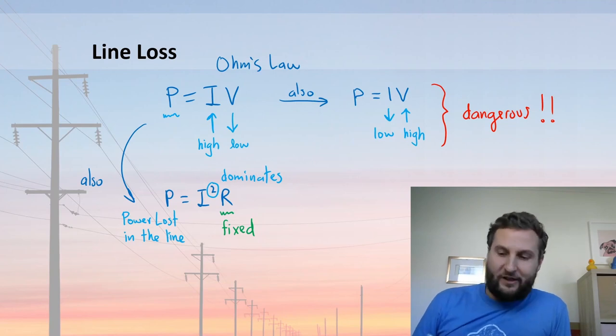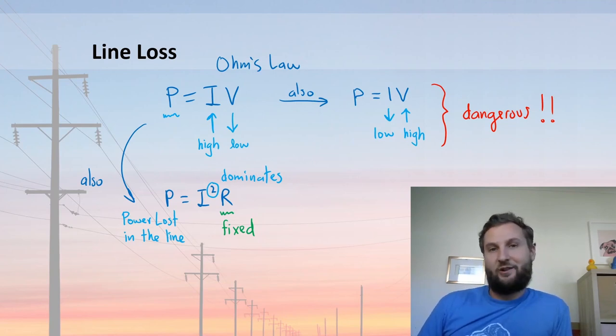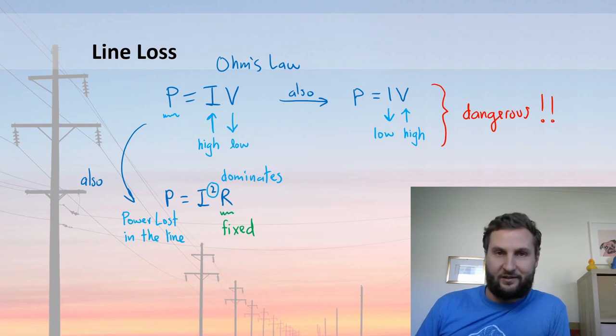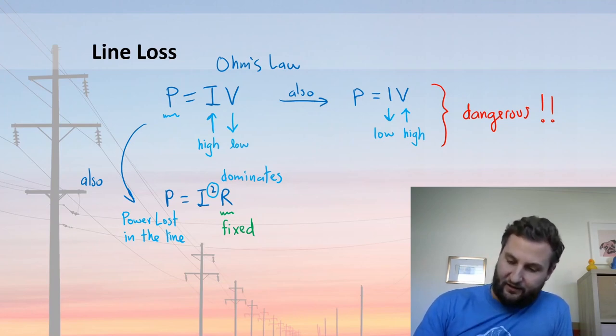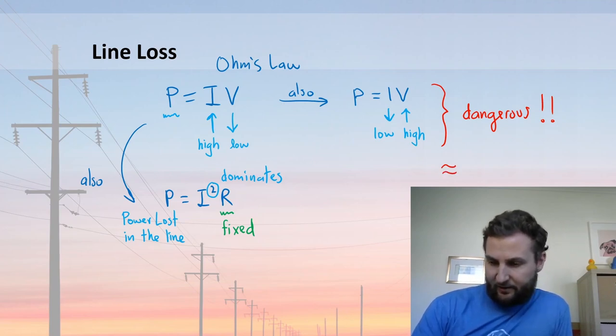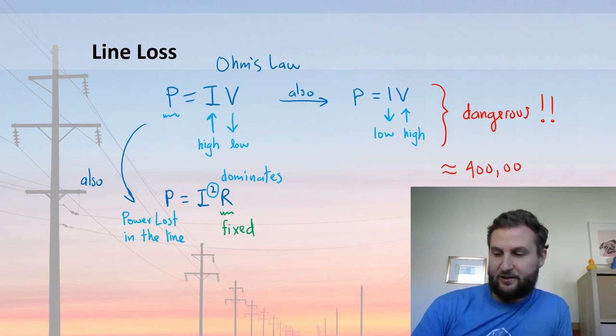So you can crank the voltage up really high with a small amount of current, still deliver the same amount of power, except that this is dangerous. And the high voltage transmission lines we see are somewhere around 200 to 600,000 volts.